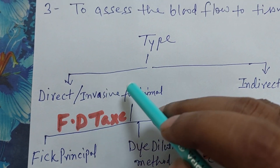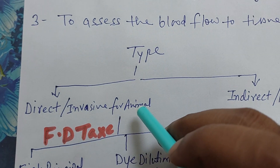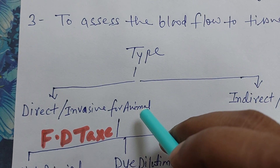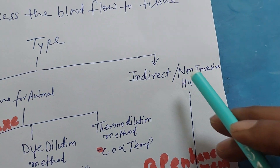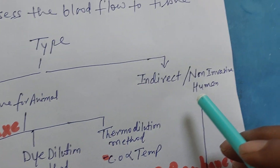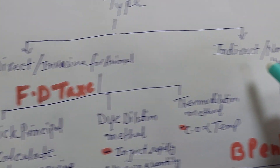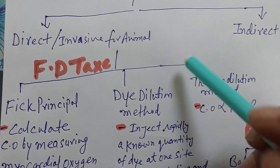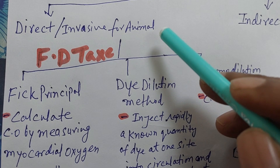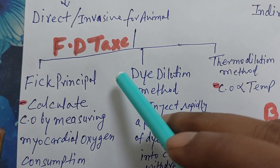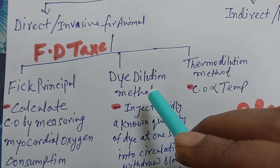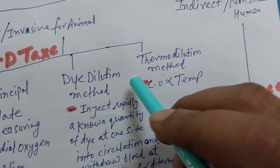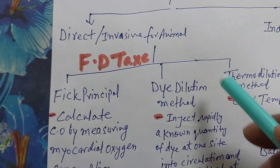The measurement types are: first, direct or invasive, used for animals; and second, indirect or non-invasive, used in human beings. In the direct method, there are three types: Fick principle, dye dilution method, and thermodilution method.